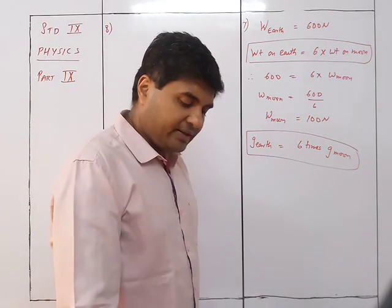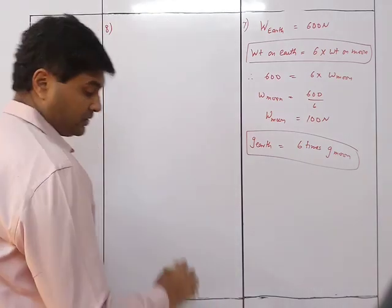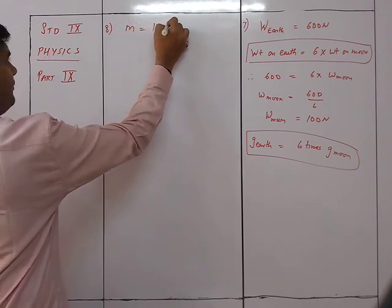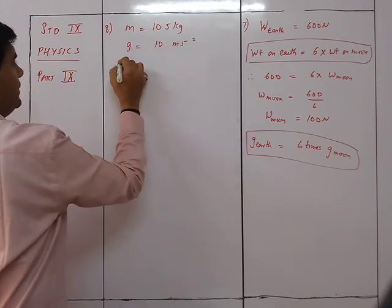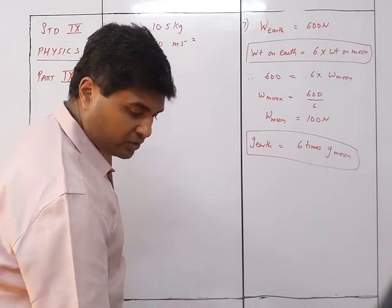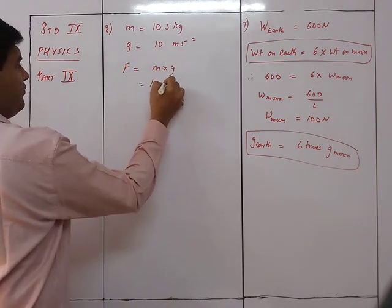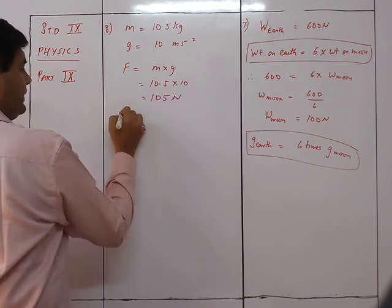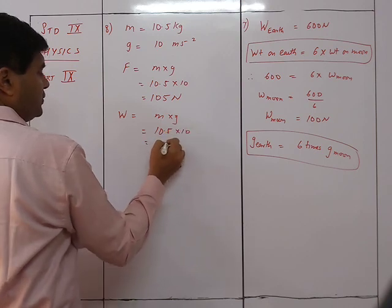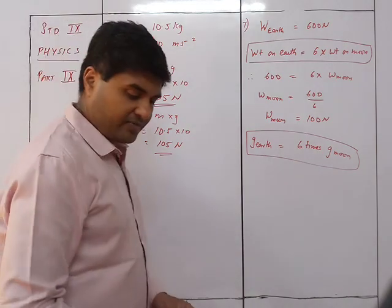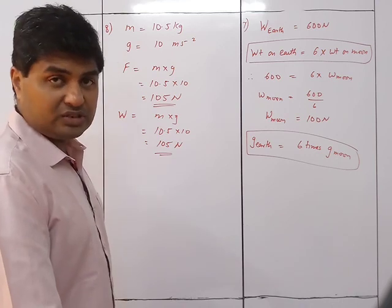Question 8: What is the force of gravity and weight of a block of mass 10.5 kg, taking g = 10 m/s²? F = m·g = 10.5 × 10 = 105 newton. W = m·g = 10.5 × 10 = 105 newton. Both answers are the same because force of gravity is nothing but the weight.